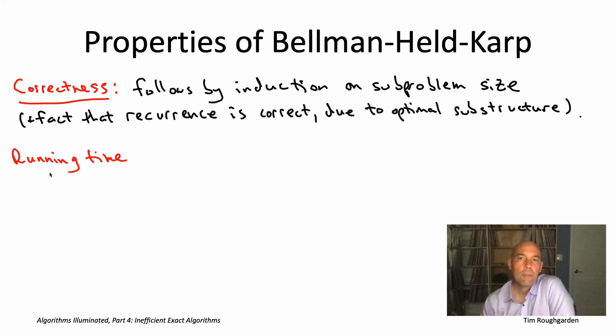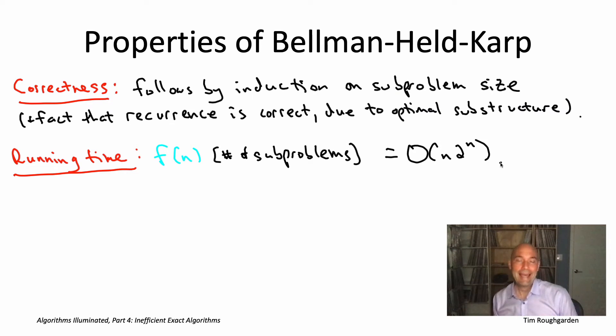For the running time, we can just go back to our generic analysis of dynamic programming algorithms, where we just count up the number of subproblems, multiply it by the time per subproblem, and throw in the post-processing work. So here, first of all, how many subproblems are there? That's what we were calling f of n before. Well, there's two to the n choices for the set capital S, a little bit less than that, but roughly two to the n, and there's always at most n minus one choices for the second parameter little j, so that means there's at most two to the n times n different subproblems we have to deal with.